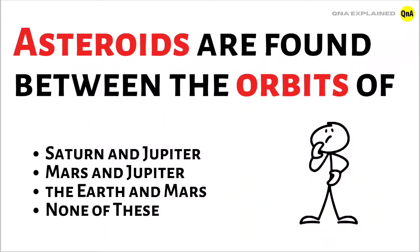Asteroids are found between the orbits of — options are: Saturn and Jupiter, Mars and Jupiter, the Earth and Mars, or none of these.